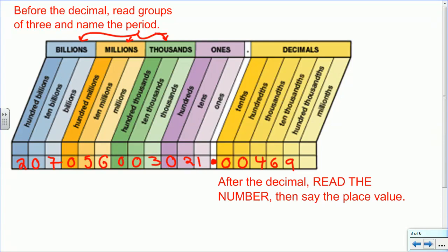So that first set of three is 207, name the period—207 billion. Next, we have 56 million. So 207 billion, named the period, 56 million, 3,021. Now, this is an important note. People say 'and' when they're naming numbers a lot, but we only use 'and' when we're looking at the decimal point. So whenever you get to the decimal point, you have to read 'and' because we're about to talk about the part of the next whole.